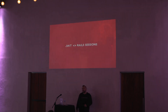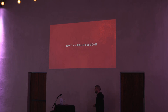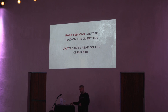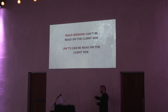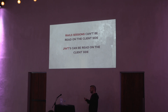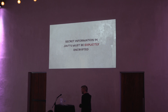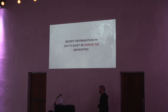Comparing JSON Web Tokens and Rails sessions: they both carry information inside themselves, but they're different. Rails sessions are encrypted while JSON Web Tokens are signed. That means Rails sessions can't be read on the client side — you need the encryption key, like the secret key base in Rails. JSON Web Tokens, on the other hand, can be read on the client side, and that's totally okay because one of the purposes is to share information with the client. However, if you want to put secret information inside a JSON Web Token, it must be explicitly encrypted using the JavaScript Object Signing and Encryption standard. That said, I would not suggest putting any kind of secret information in sessions or in JSON Web Tokens.